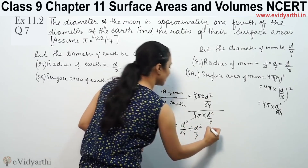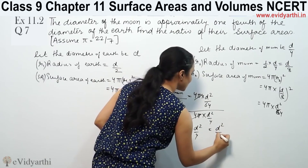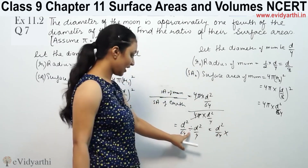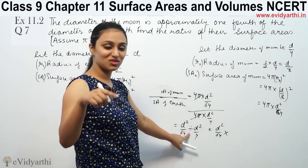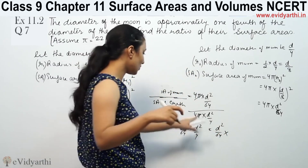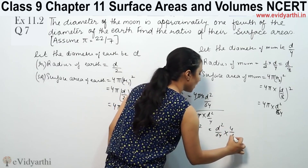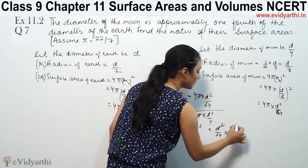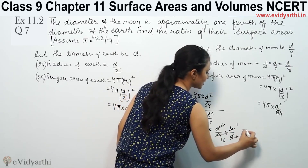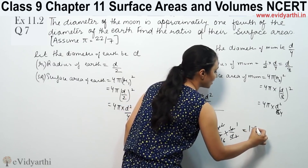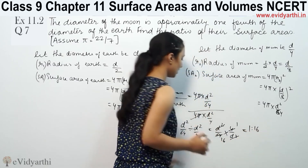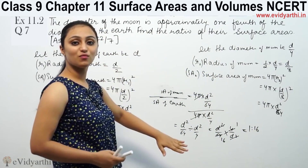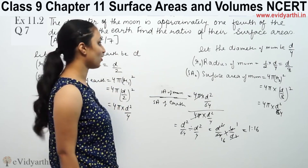That means D squared by 64 multiplied by 4 over D squared. The D squared terms cancel. We get 4 by 64, which simplifies to 1 by 16. So the ratio of the surface area of moon to surface area of earth is 1 to 16.